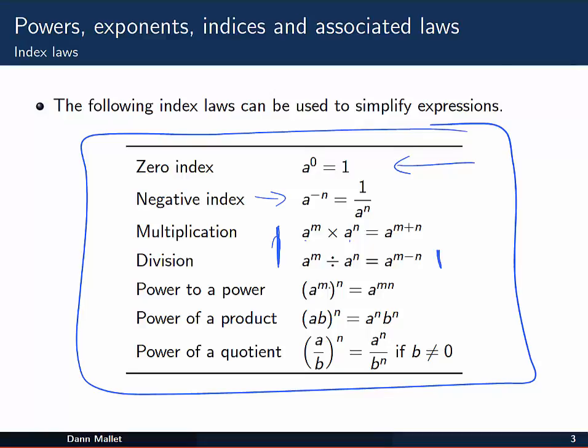If we have a power aᵐ to another power, so we're raising aᵐ to the nth power, we actually multiply those together: (aᵐ)ⁿ = aᵐⁿ. Now a power of a product: if we expand this one out we end up with (ab)ⁿ = aⁿbⁿ. And finally the power of a quotient, (a/b)ⁿ = aⁿ/bⁿ, and you've got to remember that only works when b is not zero, of course.